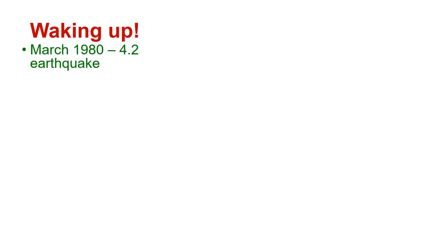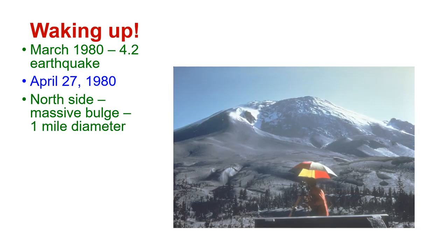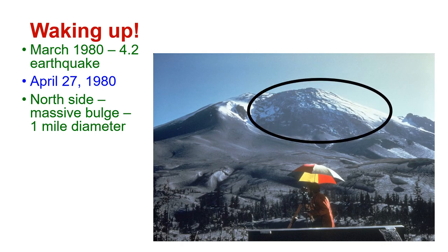Waking up. On March 1980, a 4.2 earthquake was felt on Mount St. Helens. And on April 27, 1980, on the north side of the volcano, a massive bulge began to appear. It was measured to be about a mile in diameter, and there is the bulge right there.